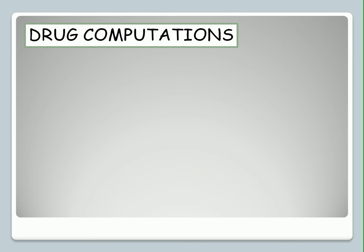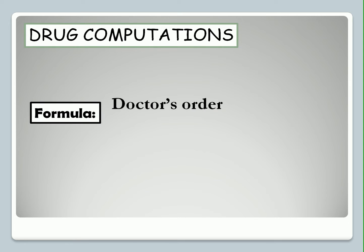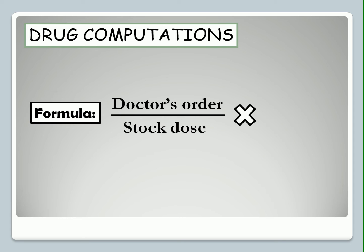Drug Computations. Our formula is: doctor's order divided by the stock dose, multiplied by the stock's volume.